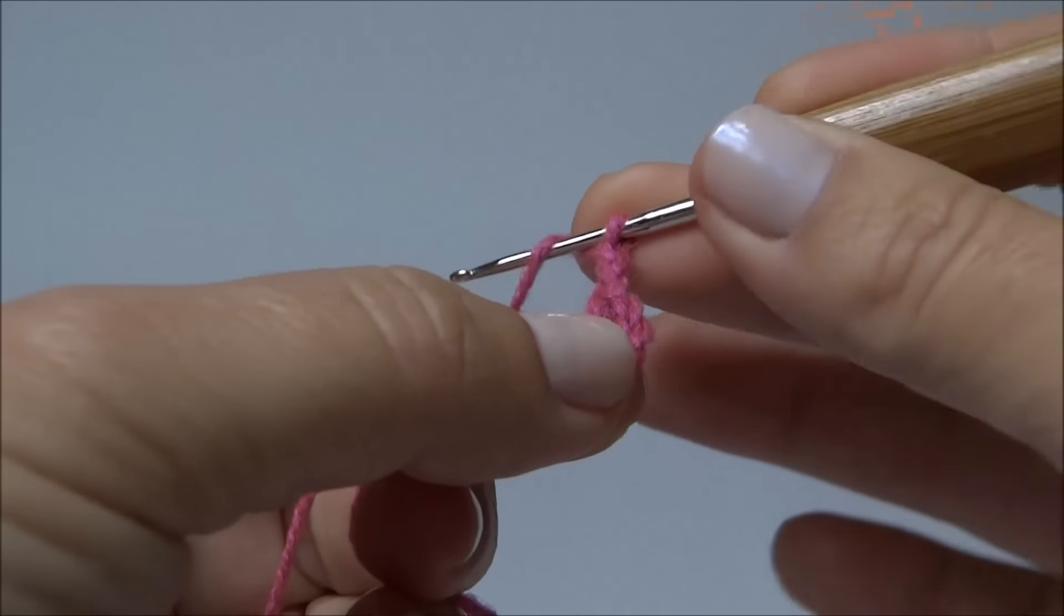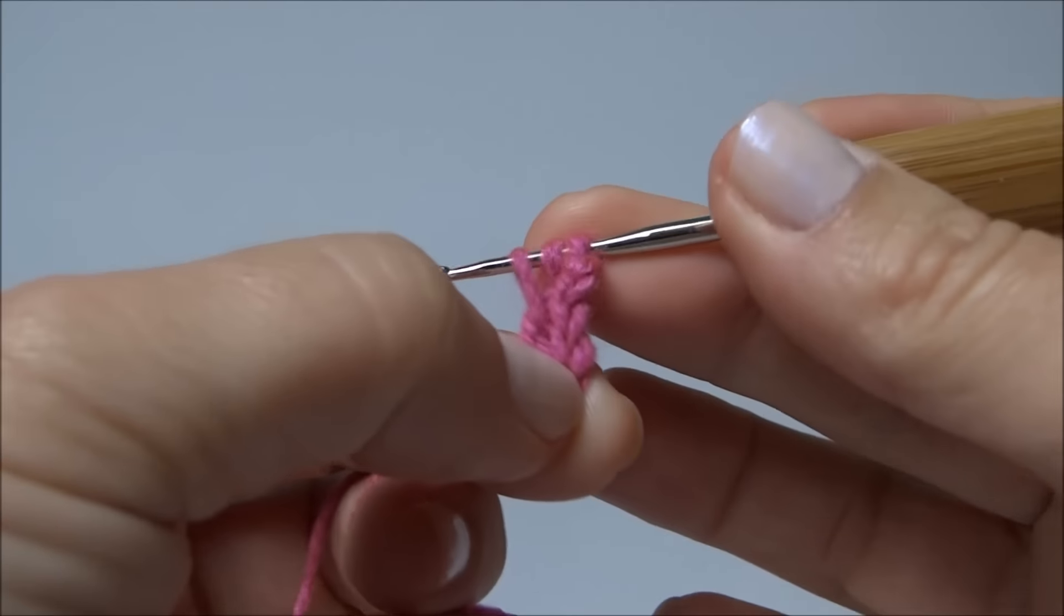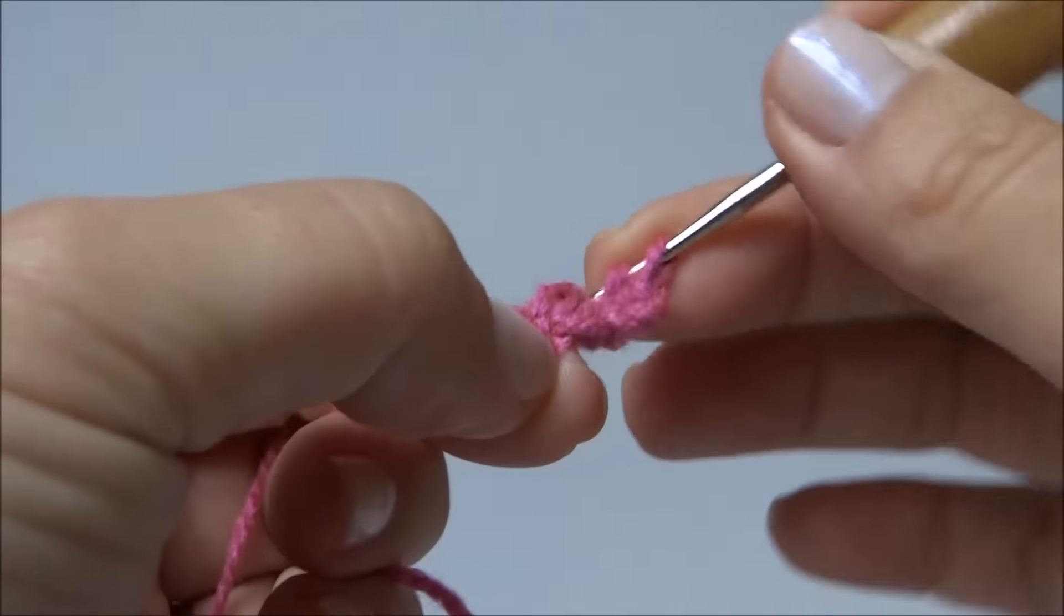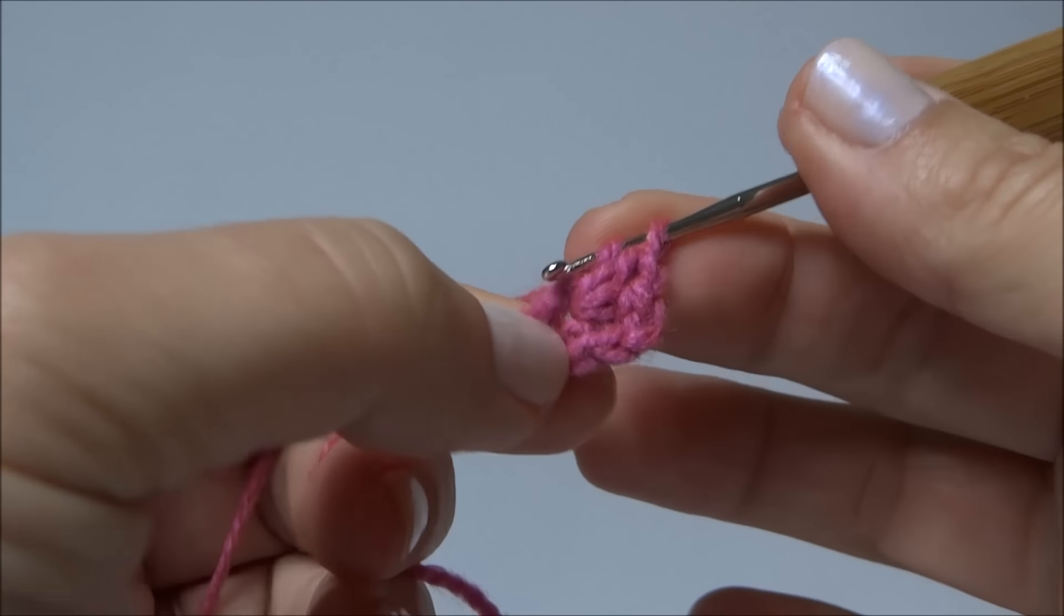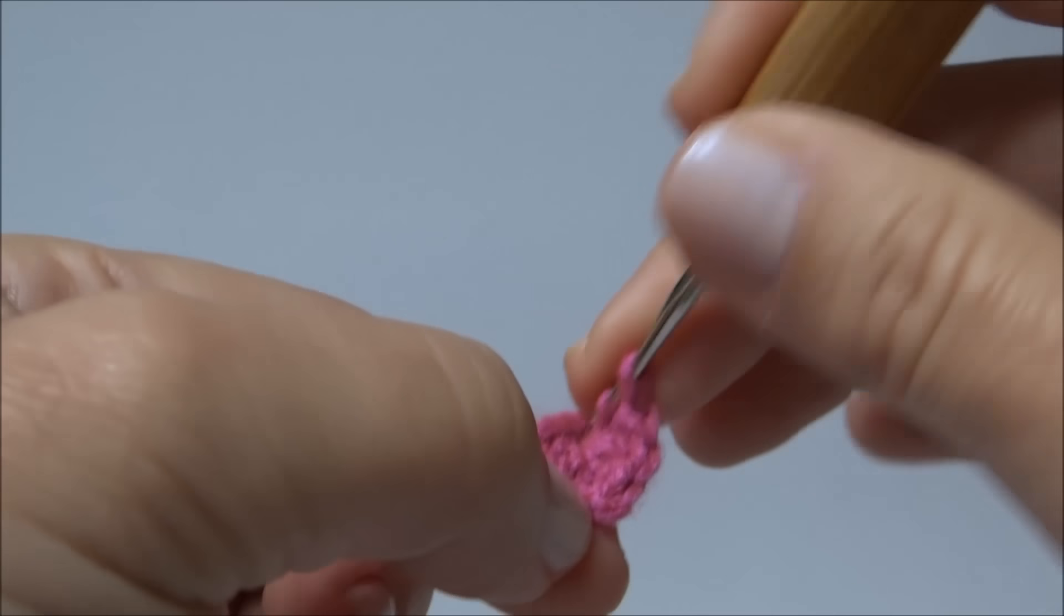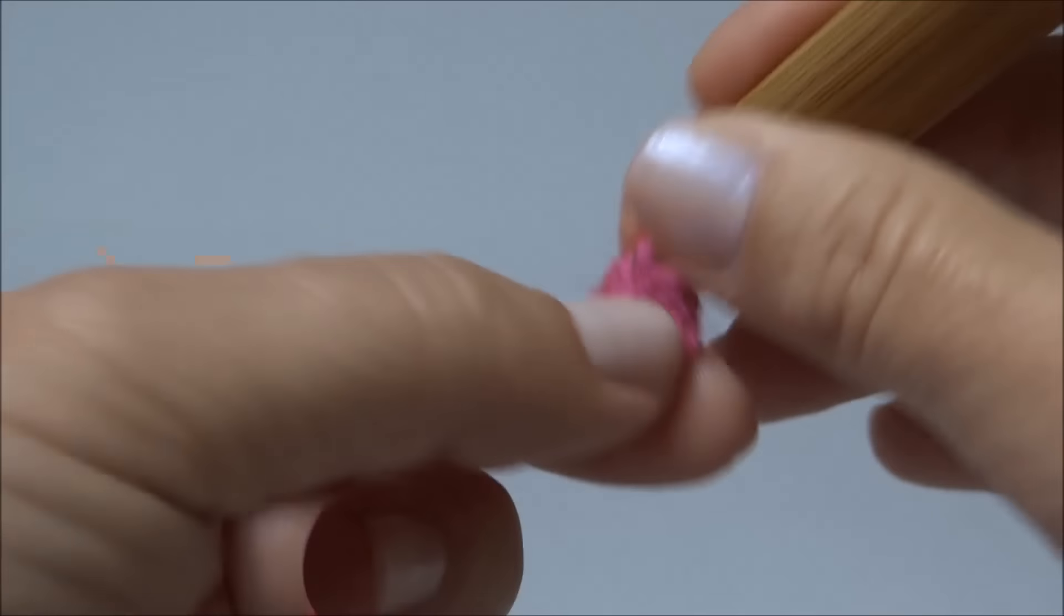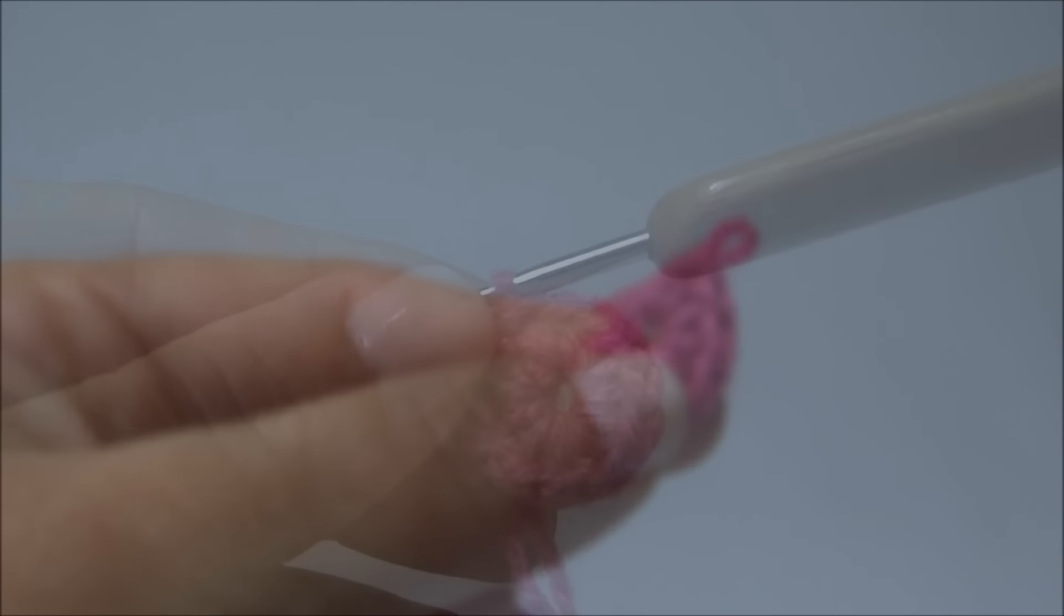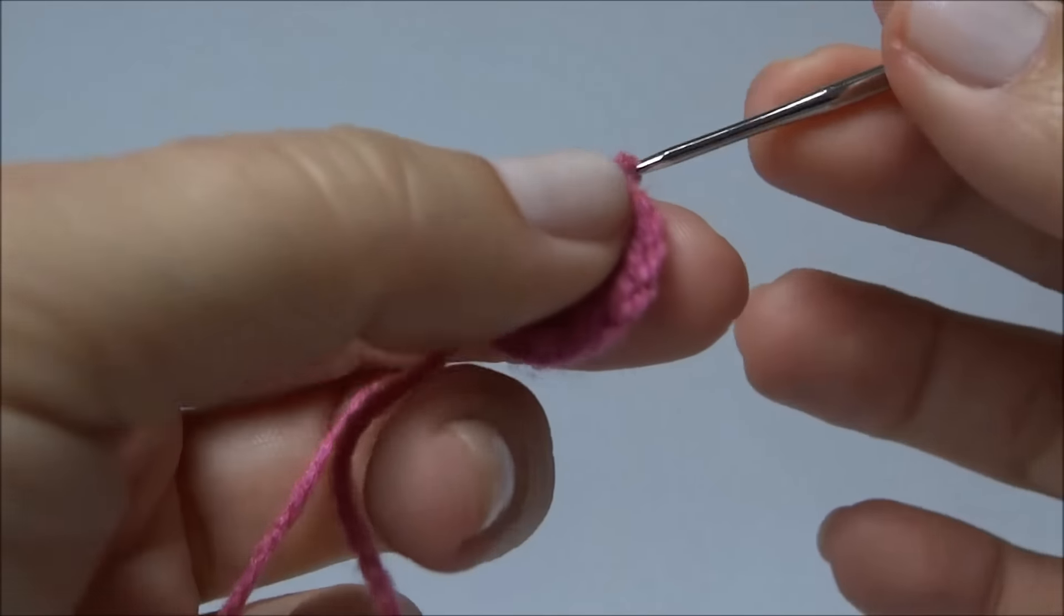Subo duas correntinhas e vou trabalhar em meio ponto, laçada na agulha. Como se eu fosse fazer um ponto alto, pego todas as laçadinhas de uma única vez. E assim vamos trabalhando. Conto as correntinhas com um ponto, então já temos três, quatro, cinco, seis, sete, até completar os doze. Finalizei os doze pontos e fechei com um ponto baixíssimo.